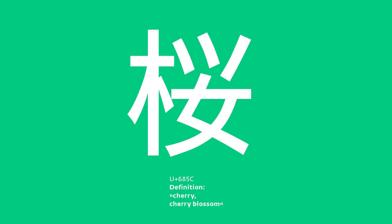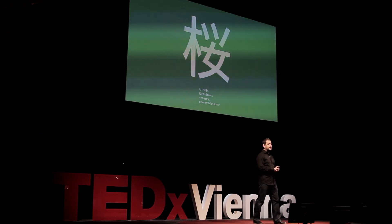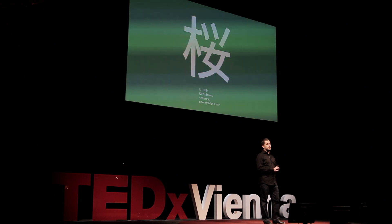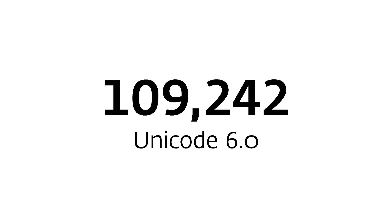And even these characters are in there — this one means cherry blossom. This is one of the thousands and thousands of Chinese characters, which leads us to the question of how many characters there are. With the latest edition, Unicode 6.0, there are 109,242 characters encoded right on your computer.